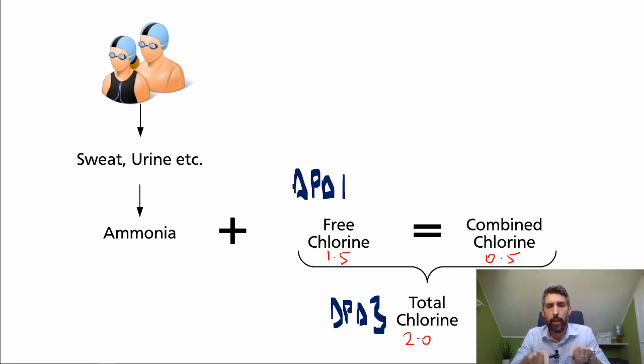So free chlorine is the first test with the DPD-1. Follow that up with a test on total chlorine with a DPD-3. And you'll find that the total chlorine should never be less than the free chlorine because that wouldn't make any sense. The total chlorine is either going to be the same as the free chlorine, in which case you haven't got any combined chlorine, or usually the total chlorine will be slightly more than the free chlorine. And it's the difference between the two that tells you how much combined chlorine you've got.